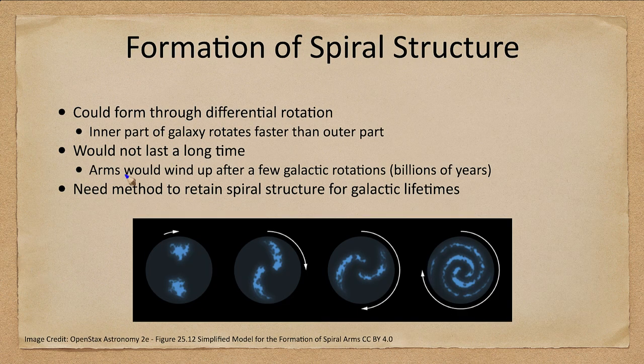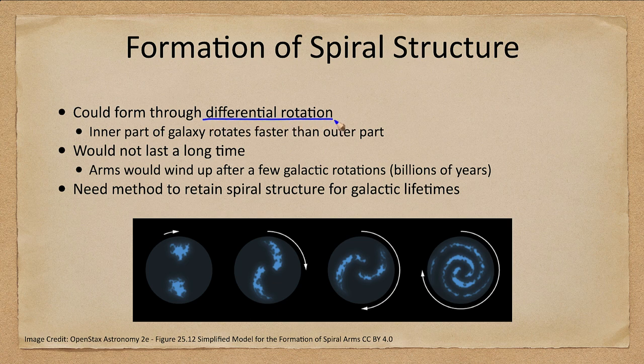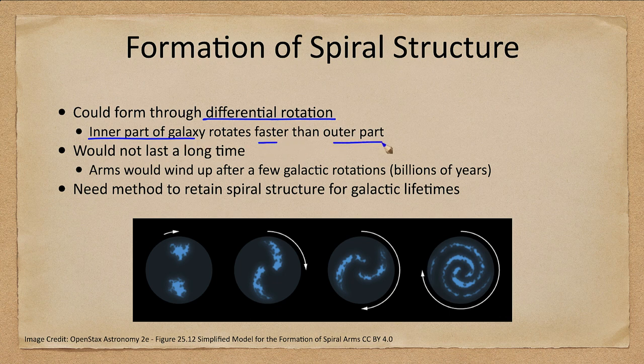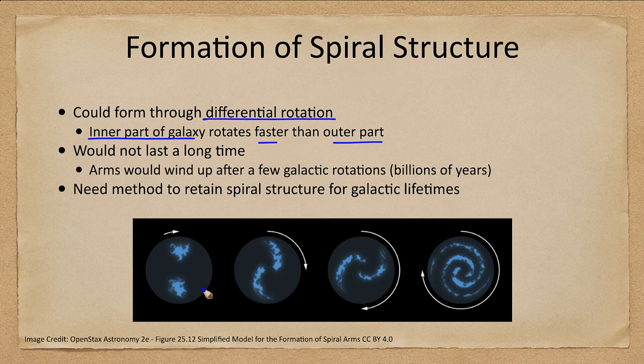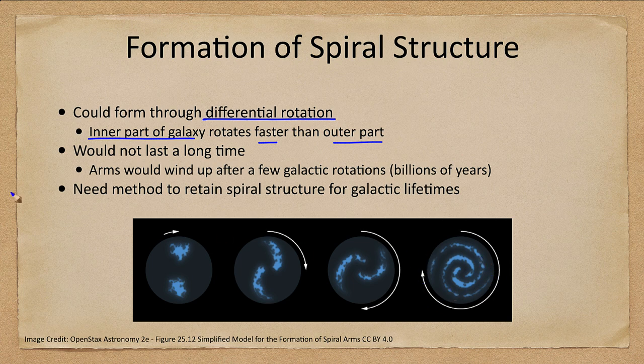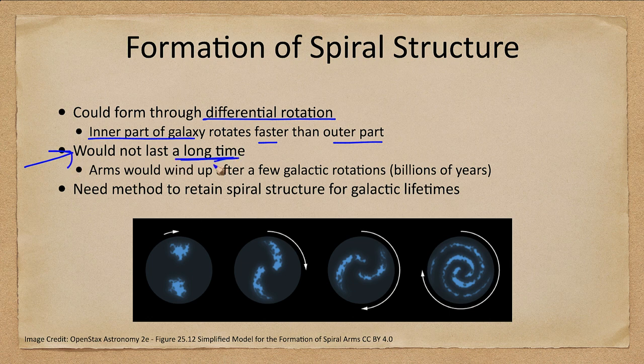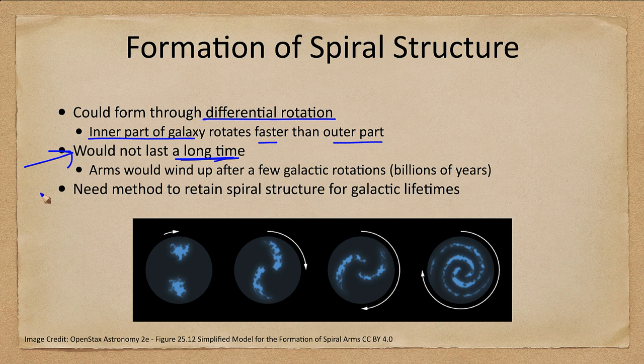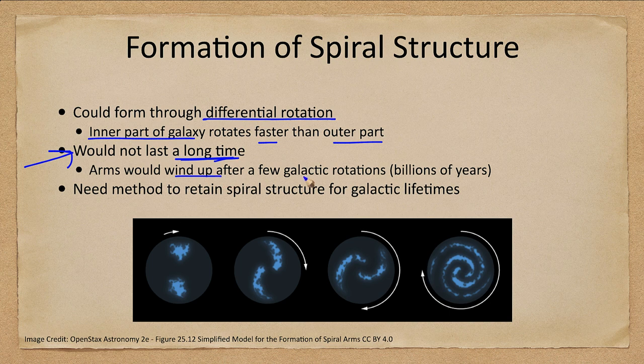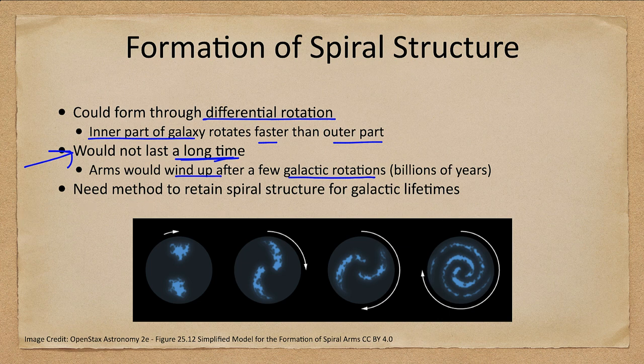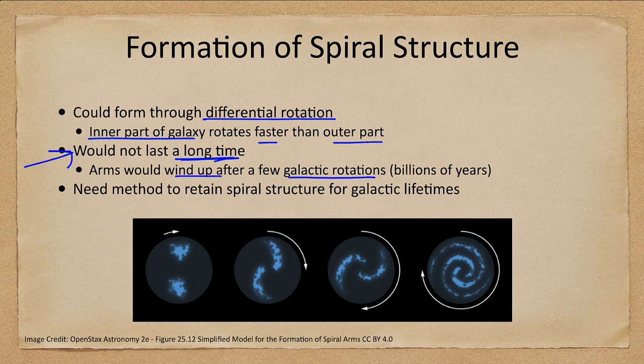So how do we form this spiral structure? Could it form through differential rotation? That means that the inner part of the galaxy rotates faster than the outer part. If you had blobs of material here you could imagine as it rotates that the inner portions twirling around faster would eventually form some kind of spiral structure. The problem is this would not last a long time. That would not be able to have spiral structure holding up for billions of years and the arms would wind up very quickly just after a few galactic rotations. We need some method that allows us to retain spiral structure over the lifetimes of galaxies.